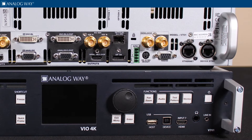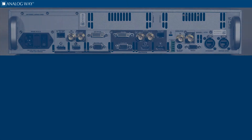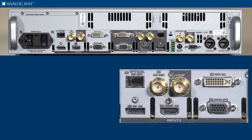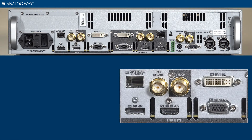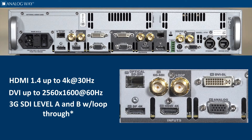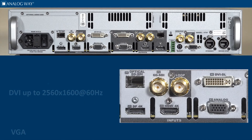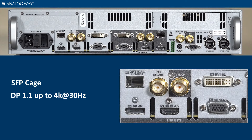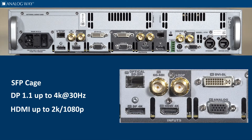Up to one audio card and up to two video cards can be added to the base unit. The base unit has seven inputs that consist of HDMI 1.4 up to 4K at 30Hz, DVI supporting DVI dual-link up to 2560 by 1600 at 60Hz, 3G SDI with loop-through compliant Level A and B, VGA supporting universal analog formats, SFP cage, DisplayPort 1.1 up to 4K at 30Hz, and the front panel HDMI up to 1080p, along with a front panel 3.5mm audio jack for stereo audio in.